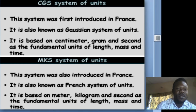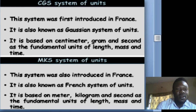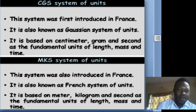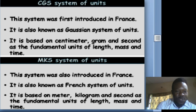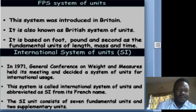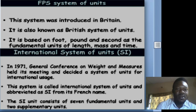We have the CGS system — known as the Gaussian system — which uses centimeter for length, gram for mass, and seconds for time. We have the MKS system, the French system, which uses meter for length, kilogram for mass, and seconds for time. We also have the FPS system, the British system, which uses foot for length, pound for mass, and seconds for time.